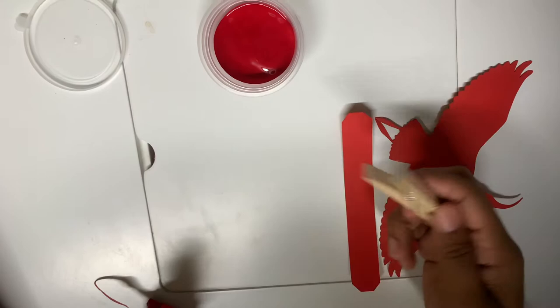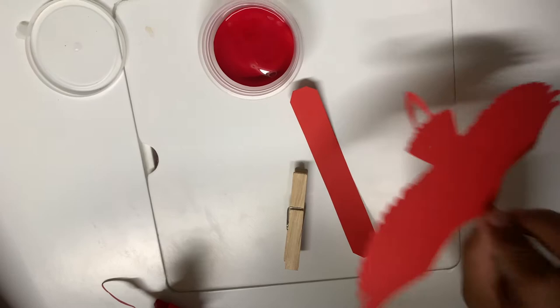So you would have gotten your clothespin, your strip of paper, your ibis cutout, and your paint.